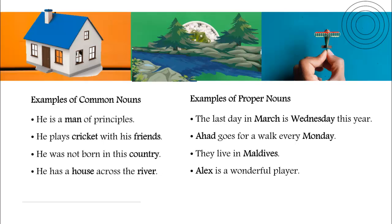'He wasn't born in this country.' The word 'country' is a general word and can be used to refer to any country, hence it's a common noun. 'He has a house across the river.' The words 'house' and 'river' are common nouns. You can see that all the common nouns are written in lowercase — their first letter isn't capitalized.